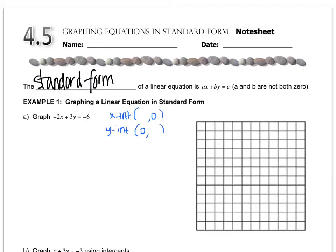So when we plug in zero, it doesn't matter which one you plug in first, you just have to be careful when you calculate. So I'll plug in zero for X. I get negative 2 times zero plus 3Y equals negative 6. Now what's cool about this technique is this whole piece cancels out because anything times zero is zero. So I just get 3Y equals negative 6.